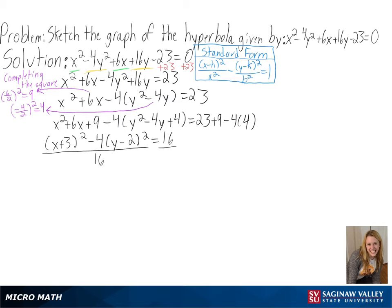To get our equation equal to 1, we must divide both sides by 16. We can then split our fractions up and get (x + 3)²/16 - 4(y - 2)²/16 = 1.